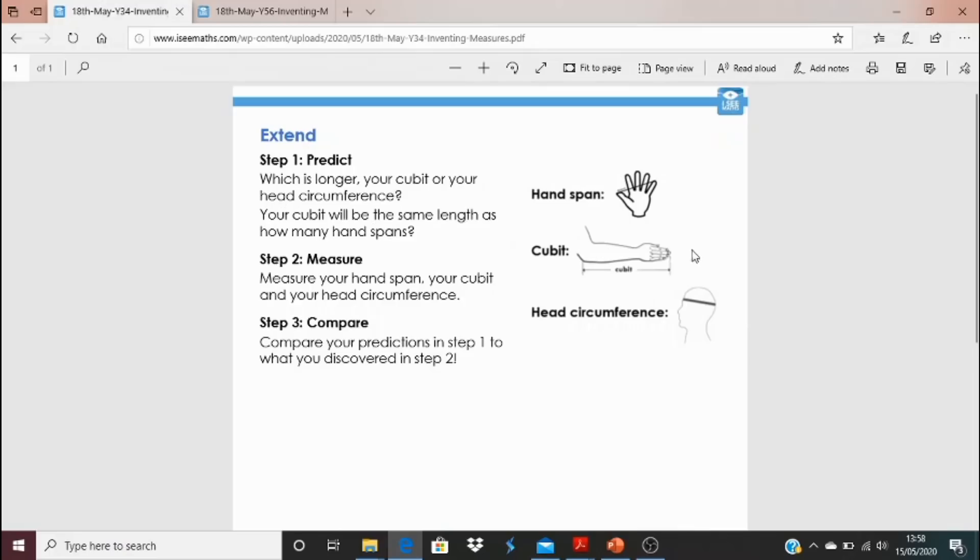Then, measure your hands span, your cubit and your head circumference and work out how many centimetres they are. And then finally, compare them. So, compare your predictions in step one, what you thought you'd find, to what you actually discovered in step two. There's one thing that, for me, was quite surprising. And I wonder if you find that.